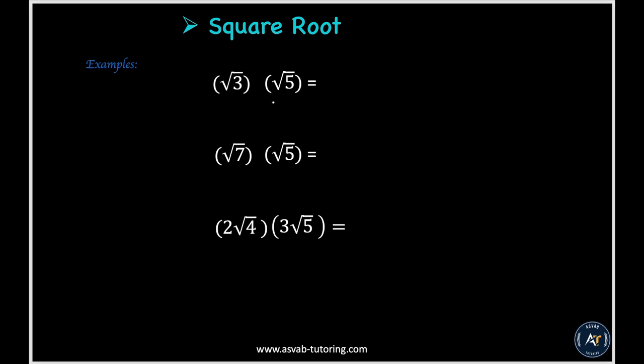So how to multiply square root? When you multiply the square root, you need to multiply inside and outside also if you have. So let's do that. That will give you square root of 3 times square root of 5. That will give you square root of 15. Now the same way. Square root of 7 times square root of 5. That will give you square root of 35.